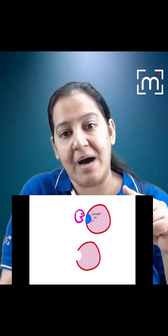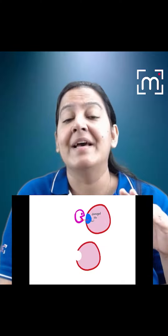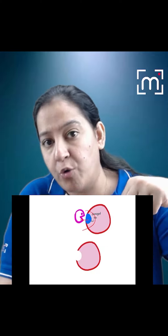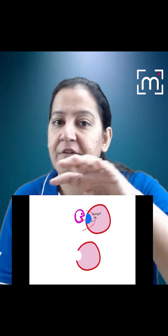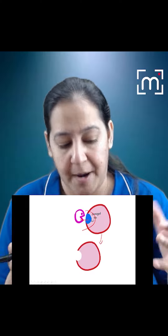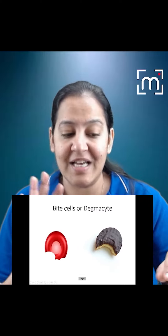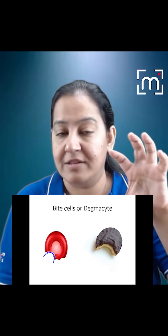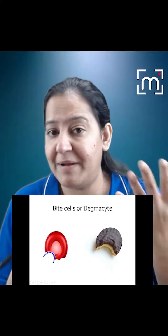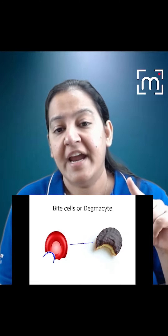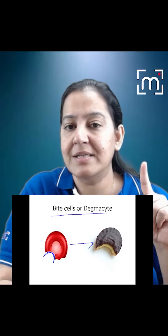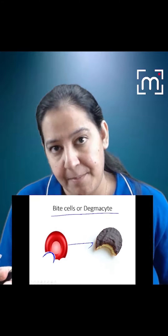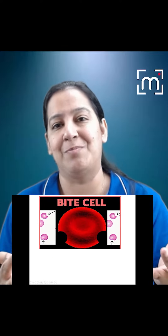When such an RBC passes through the spleen, the splenic macrophage bites out the Heinz body from the RBC, giving it a bitten appearance. Such an RBC, in which one bite is taken out — the portion containing the Heinz body removed by the splenic macrophage — is known as a bite cell, or degmacyte. This is how bite cells are formed in G6PD deficiency due to Heinz bodies.